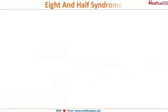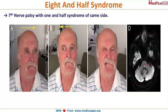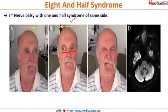Eight-and-a-half syndrome is seventh nerve palsy along with one-and-a-half syndrome on the same side. In this patient there is facial palsy along with one-and-a-half syndrome. Seven plus one-and-a-half equals eight-and-a-half — that is how you get eight-and-a-half syndrome.